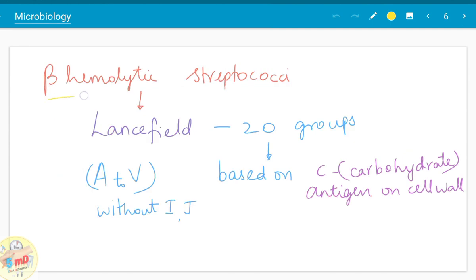The beta hemolytic Streptococci are again divided into 20 groups by Lansfield. Lansfield named them from A to V without I and J, and these 20 groups are classified based on the C carbohydrate antigen present on the cell wall of the bacteria.